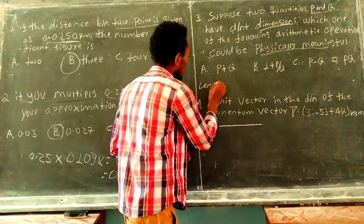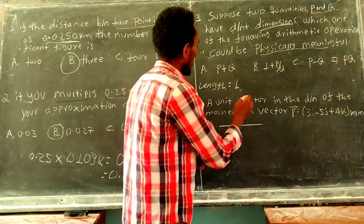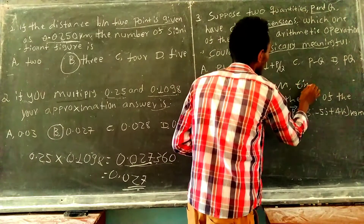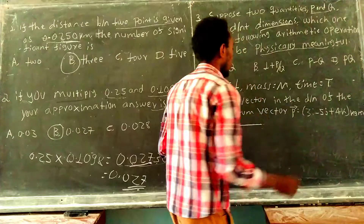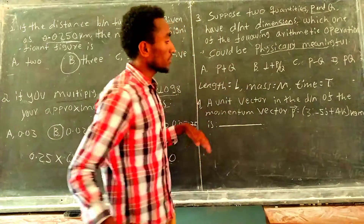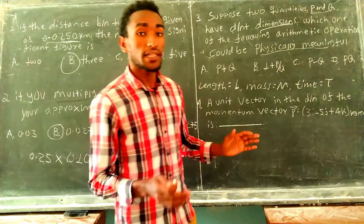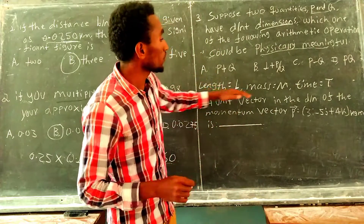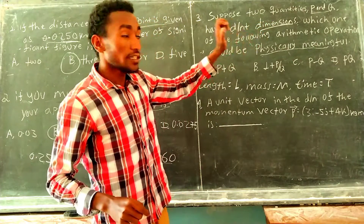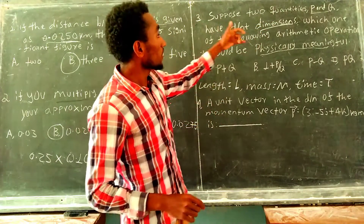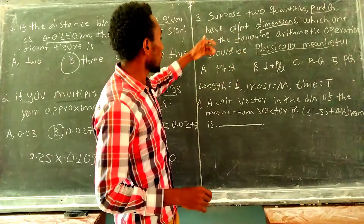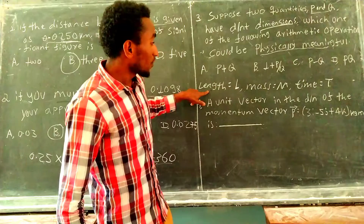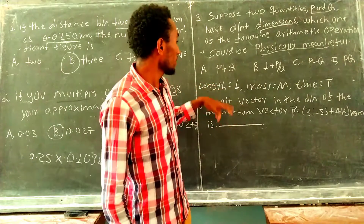The length is given by capital L, the mass by M, and the time by capital T. What is the difference between a derived quantity and a fundamental quantity? The quantity itself produces different dimensions. If you take different dimensions, you must work in different dimensions.